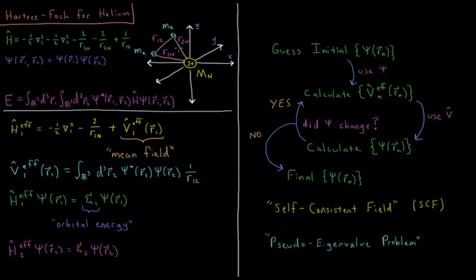Our wave function is going to depend on six Cartesian coordinates — three coordinates of electron one and three coordinates of electron two. Our Hamiltonian in atomic units is negative one-half del one squared, the kinetic energy of electron one, and negative one-half del two squared, the kinetic energy of electron two.